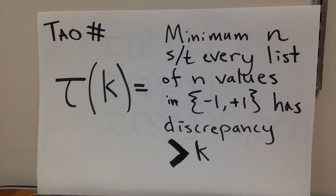So a consequence of Tao's theorem is that there exist these things called Tao numbers, which I'm going to call Greek letter tau of k. And this is going to be the minimum n such that every list of just n values in negative one and plus one has discrepancies strictly larger than k. I don't need to look at an infinite list. I can look at a finite list, and this will eventually happen for every finite discrepancy. I can only go to a certain length.